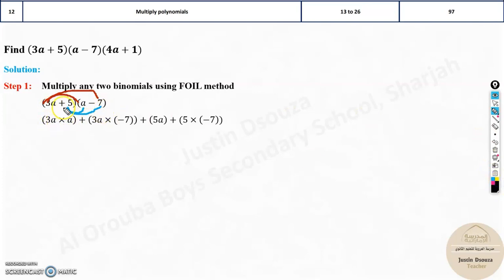3 times A. Sorry, that is not the answer. That is the method to solve. 3A times A, 3A times minus 7. Don't forget the sign. 5 times A. That will be 5A. And 5 times negative 7.